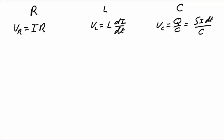For a resistor, the voltage is proportional to the current with the proportionality constant R. For an inductor, it is proportional to the derivative of the current with a proportionality constant L. And for a capacitor, although we originally learned Q over C, we know that Q is the integral of the current with time, then divided by C. If we have an AC circuit, the current through the circuit will be oscillating, and we can imagine it as an amplitude times a sine function, where we need the factor omega to correct the units.